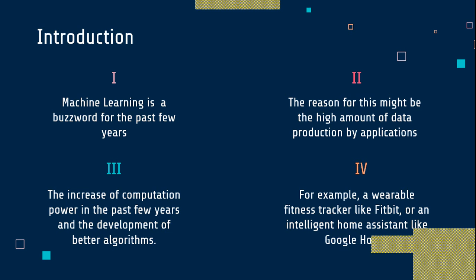Because processor speed has increased, storage capacity has increased, and RAM capacity has increased, it is now very easy to implement machine learning, deep learning, and artificial intelligence. Because of this revolution in the computer and IT sector, implementing AI and machine learning is much more accessible today.